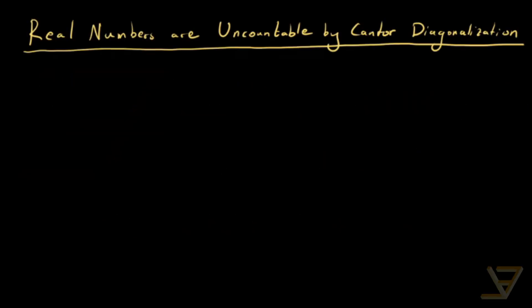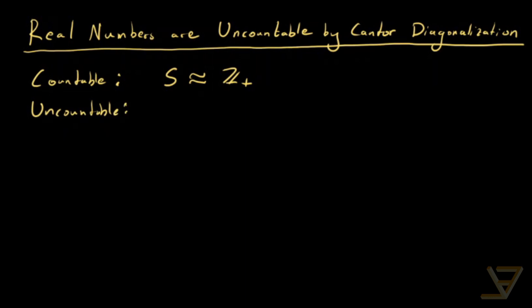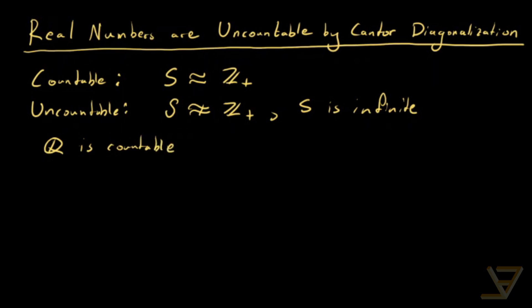Hi everyone. Let's talk about the fact that the real numbers are uncountable, proven by a technique called Cantor diagonalization. Recall, countable means that the set in question is in bijection with the positive integers. Uncountable means that S is not in bijection with the positive integers and S is infinite. In a different video I showed that Q, the rationals, is countable, and this time we're going to show that R is uncountable.